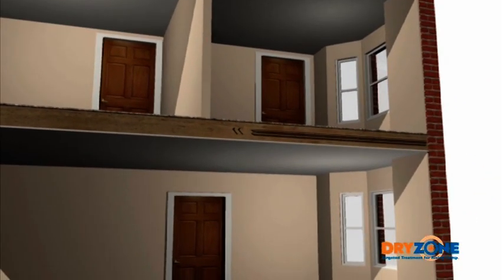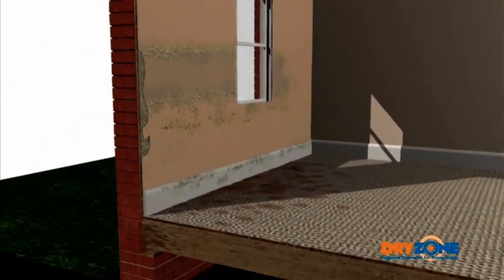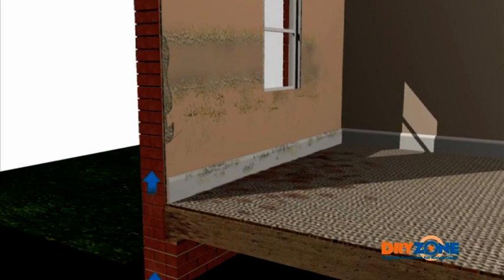Rising damp occurs when groundwater enters the structure of a building, rises up through the walls and evaporates internally, causing decorative spoiling, crumbling plaster and timber decay.